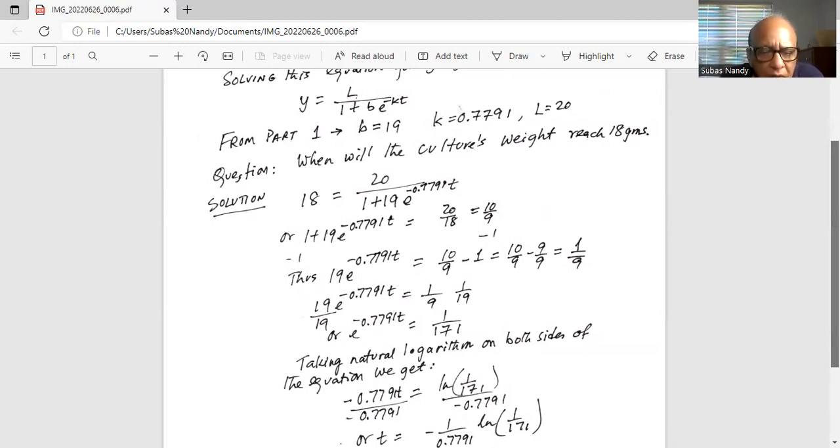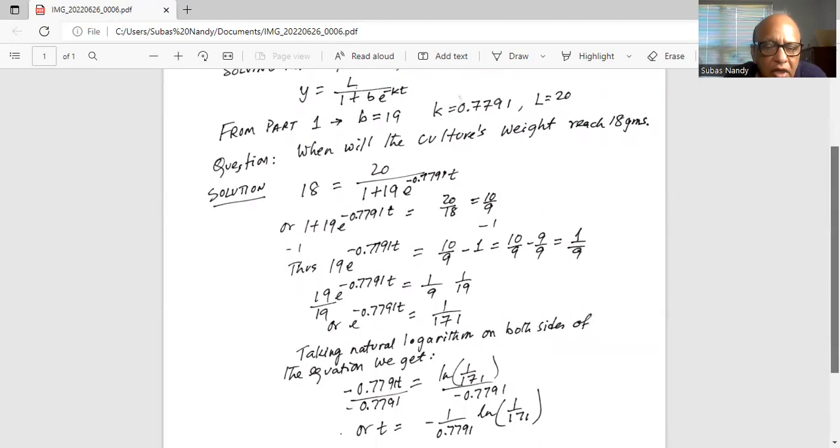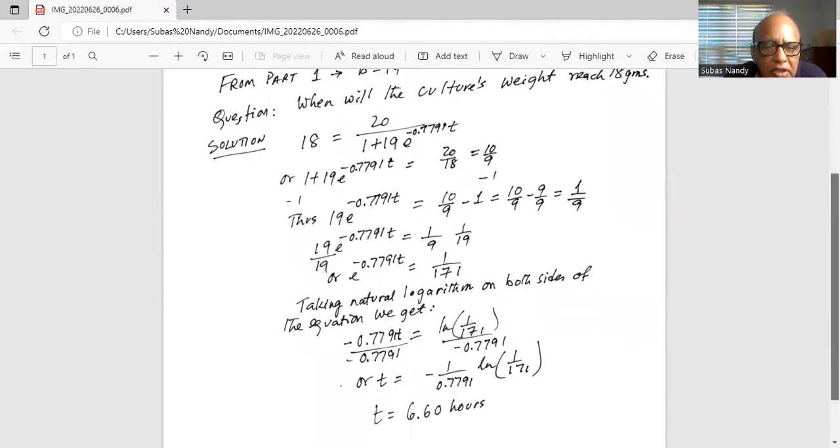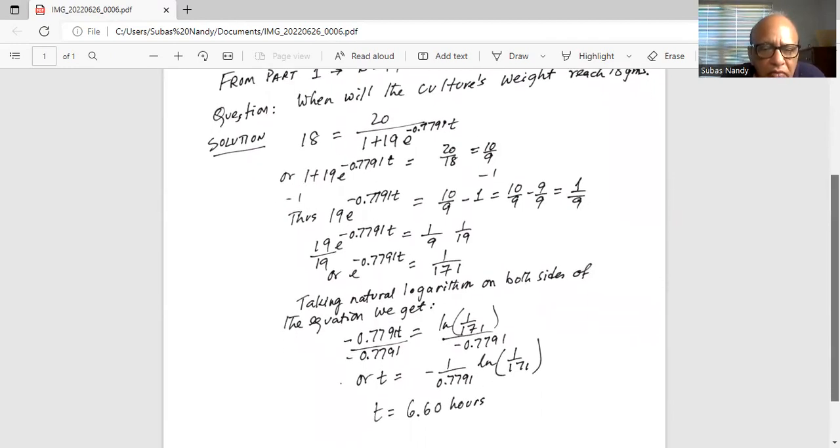Now we divide by 0.7791 on both sides to get t equals minus 1 over 0.7791 times natural logarithm of 1 over 171. When we calculate this out using our calculator, we get time is equal to 6.6 hours.